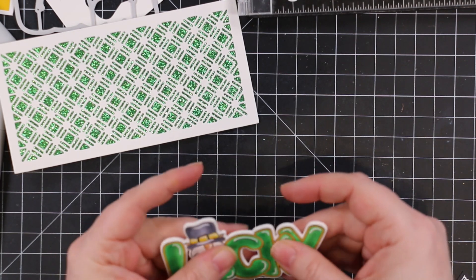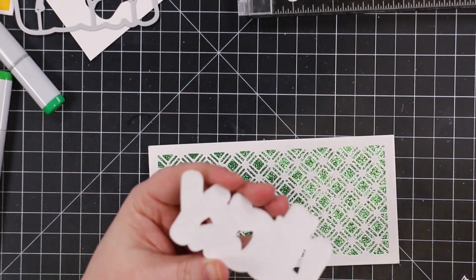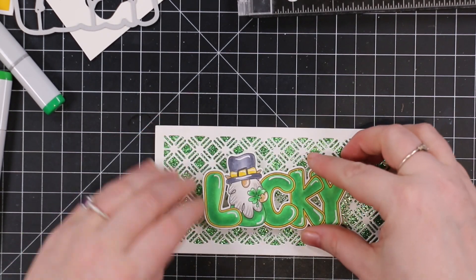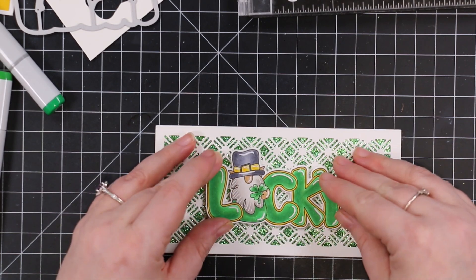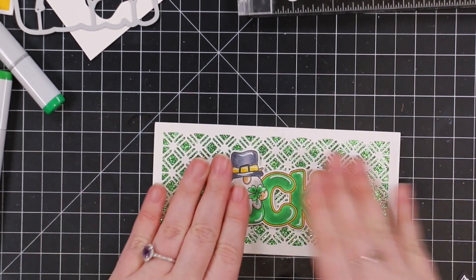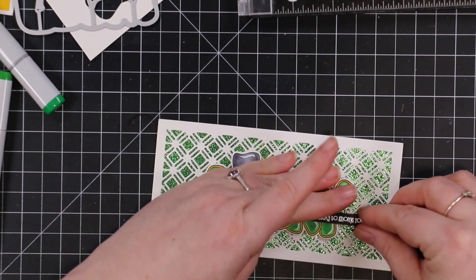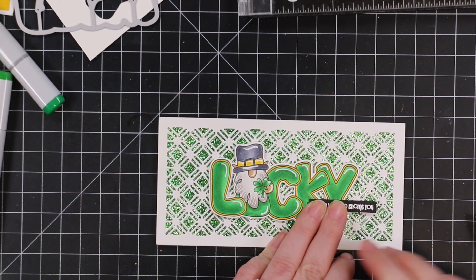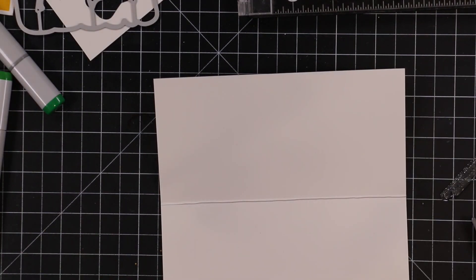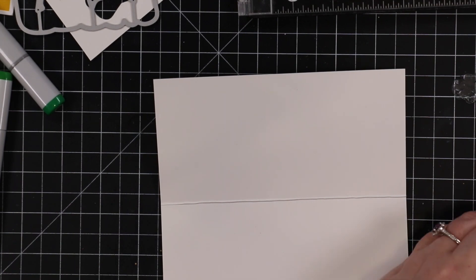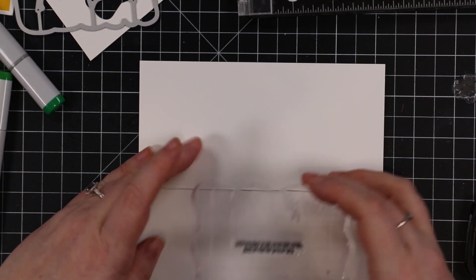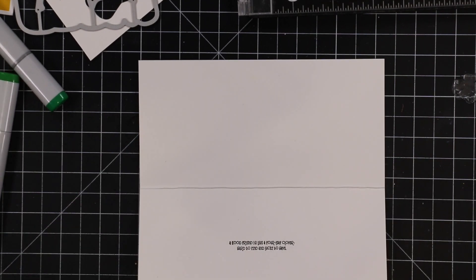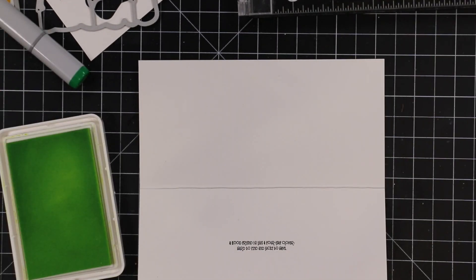Off camera, I white heat embossed a little sentiment from that same set onto black cardstock that says 'I'm so lucky to gnome you.' I love punny sentiments. On the inside of my card base, I stamped another sentiment: 'A good friend is like a four-leaf clover, hard to find and lucky to have.'